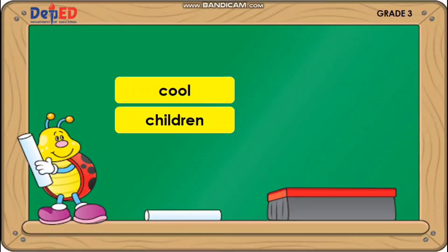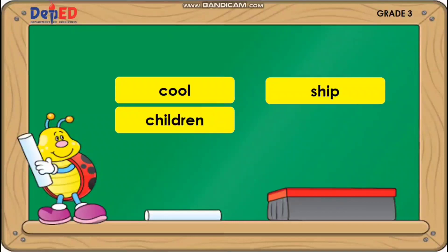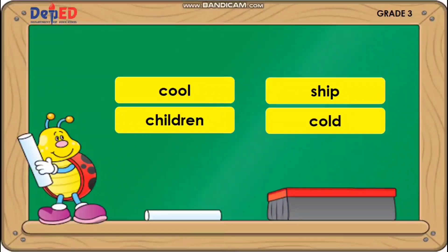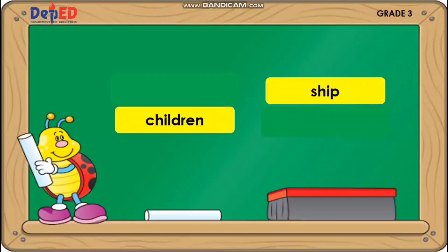Cool. Children. Sheep. Cold. Which words have consonant digraphs? Brilliant — Children and Sheep.